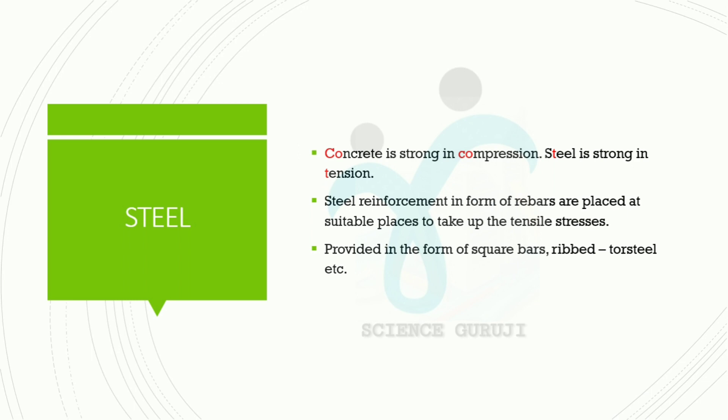Concrete is strong in compression and steel is strong in tension. Steel reinforcement in the form of rebars is placed at suitable places to take up the tensile stress. We have to use steel reinforcement in the form of rebars wherever tensile stress occurs. They can be provided in the form of square bars, ribbed tor steel, etc.